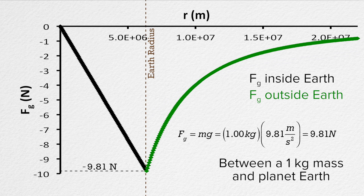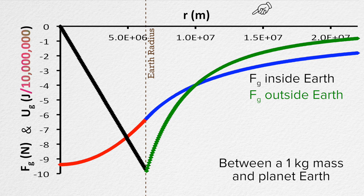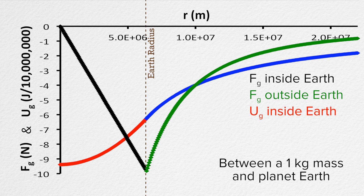Now let's add universal gravitational potential energy to the graph. Note that we must divide the gravitational potential energy between the 1 kilogram object and the Earth by 10 million in order to fit it on the graph. When the object is inside the Earth, the potential energy graph is in red; when the object is outside the Earth, the graph is in blue.